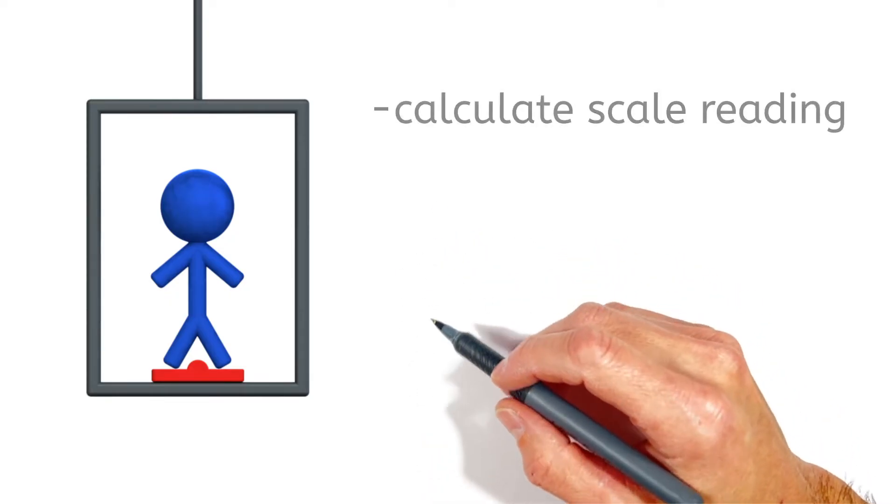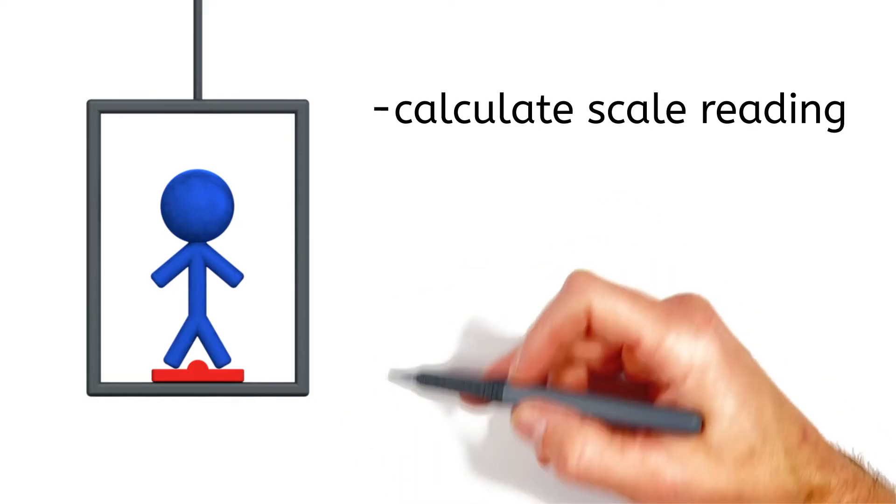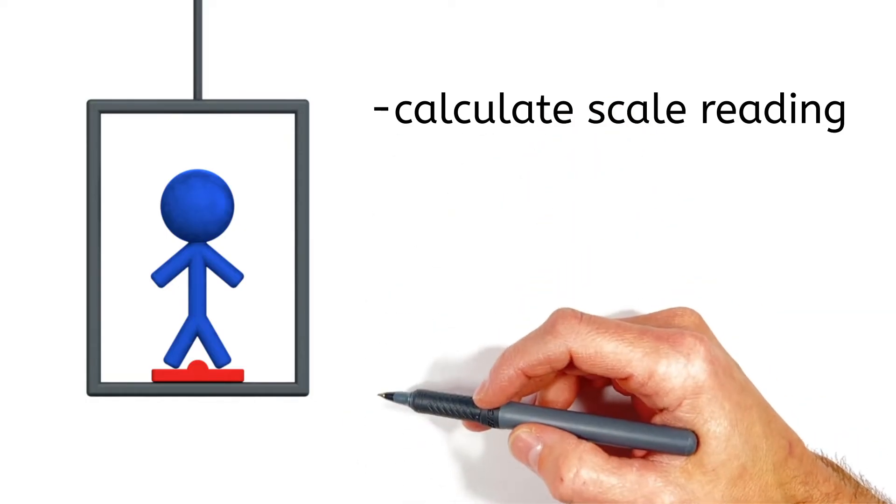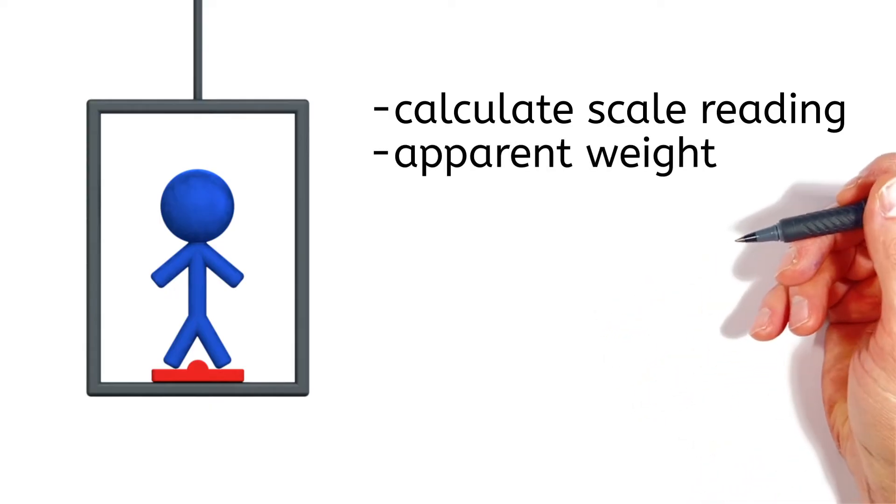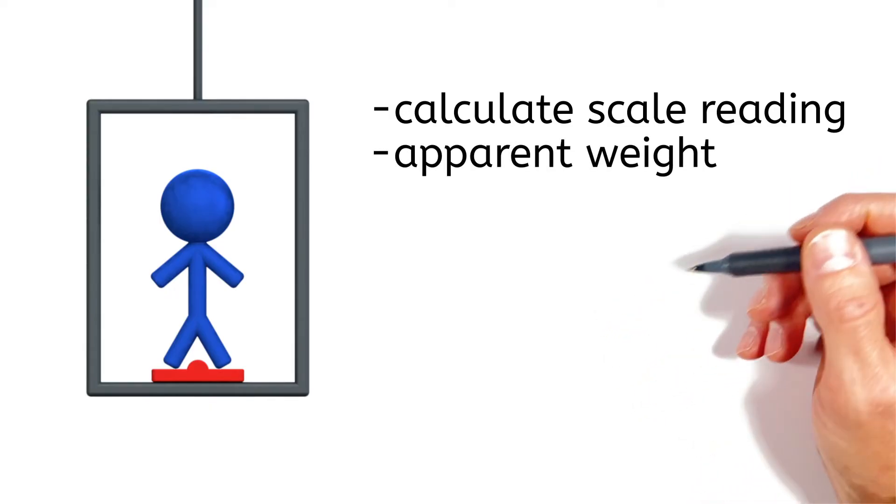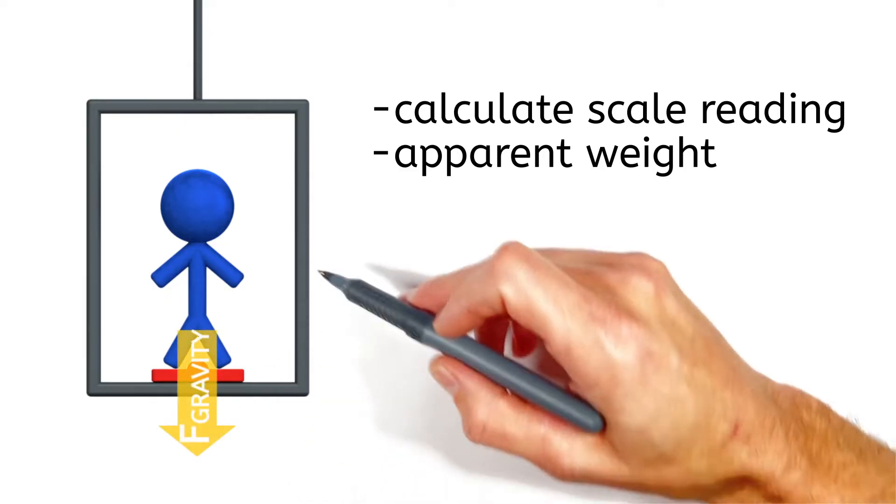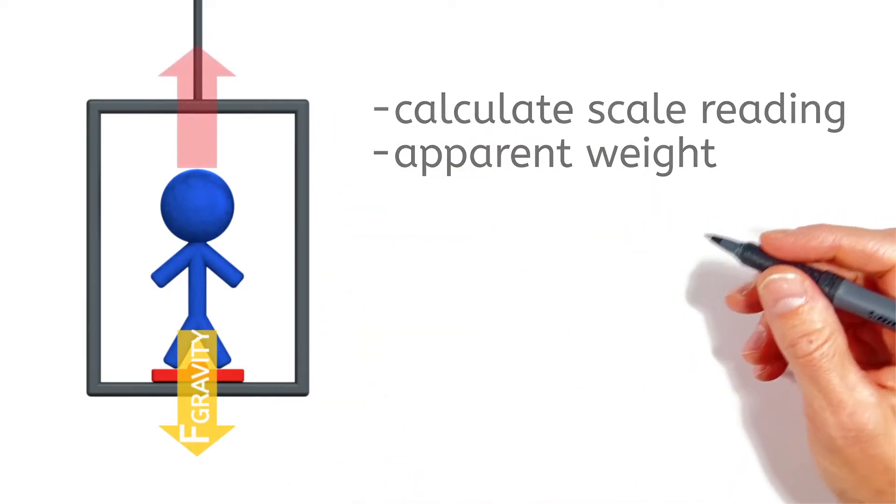First, I'm going to walk you through how to calculate the reading on this scale as the elevator moves around. Then in doing that, we're going to wind up talking about something called apparent weight, which is really the fact that you don't actually feel the force of gravity. What you feel is something holding you up.